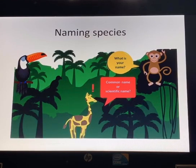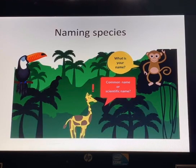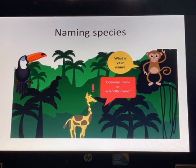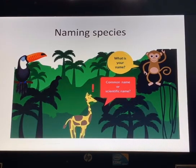We will explain what binomial nomenclature is, what the difference is between common names and scientific names, which are the rules for writing scientific names, and we will give some examples of scientific names of different species.